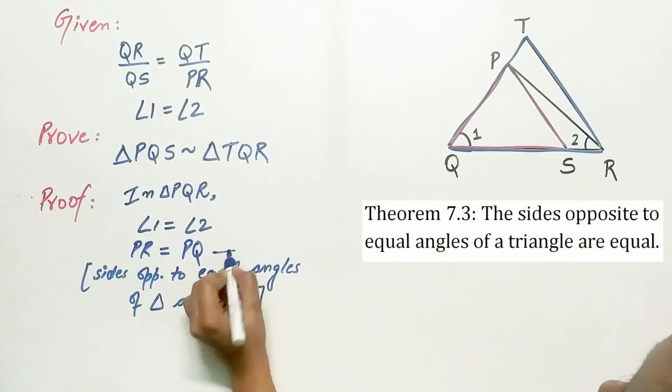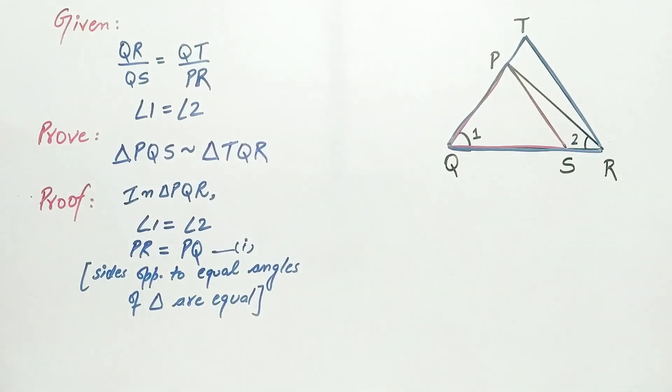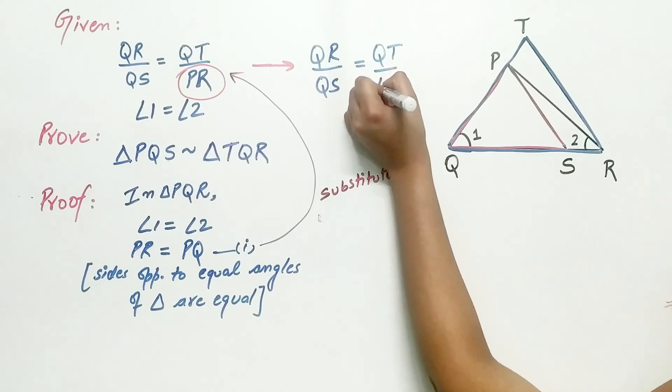Now, let's mark it as 1. Can I substitute PQ in place of PR? Now, QR by QS is equal to QT by PQ.